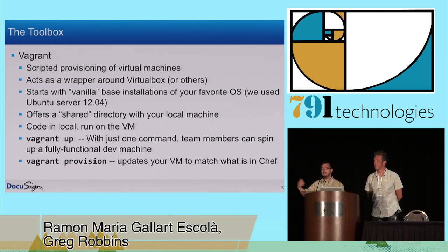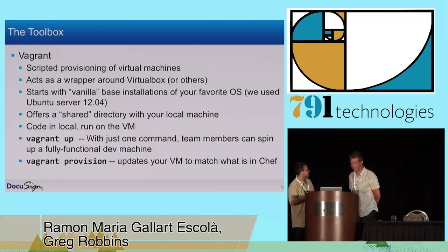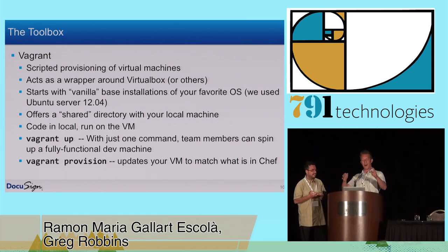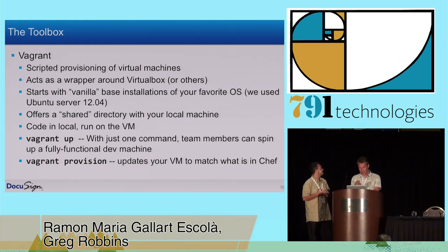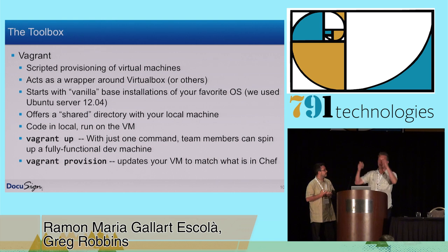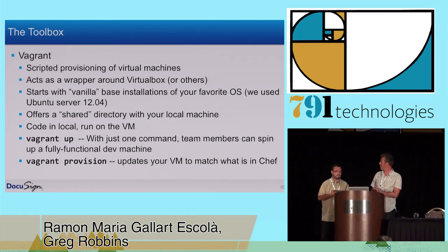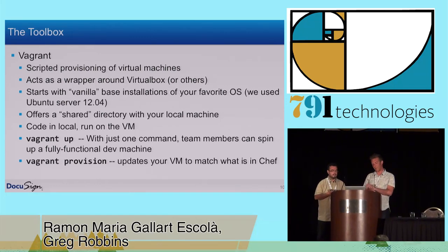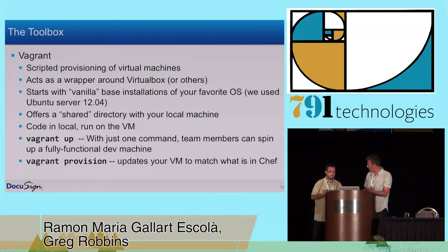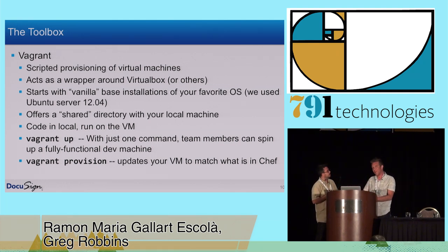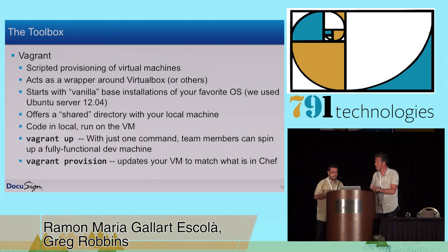So you can code in local and run on the virtual machine. My two favorite commands: all you have to do to get these development environments up and running is download the repository, go in and type 'vagrant up', and it will spin up the fully working virtual machine. You don't have to spend any more time configuring or mucking about — just two words and you've got the machine up and running. The other command is 'vagrant provision', which when we've made some changes to that environment, will make the virtual machine match what you've defined in your Chef code.